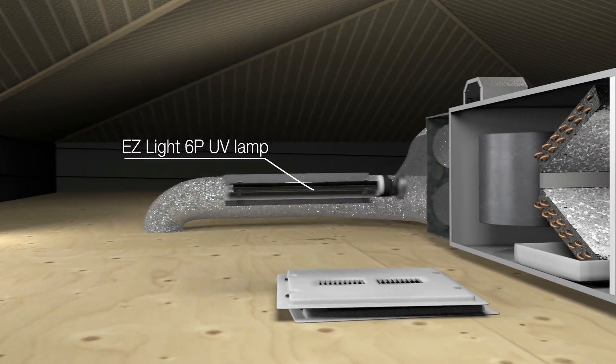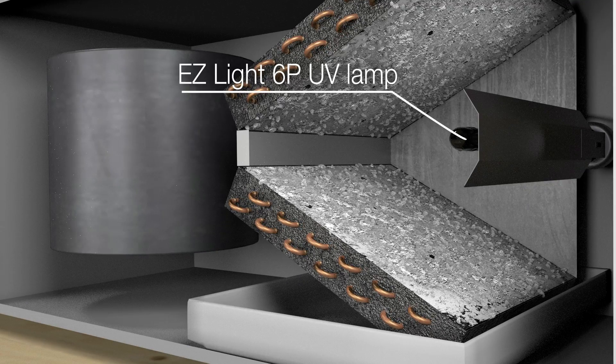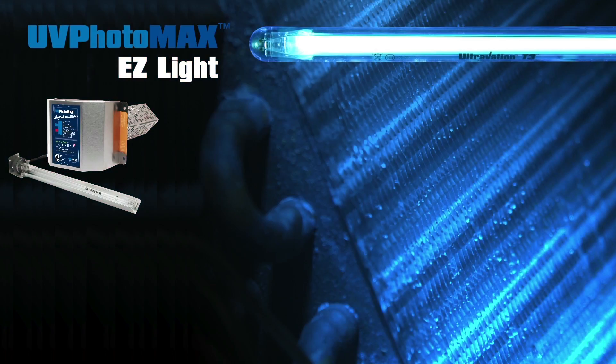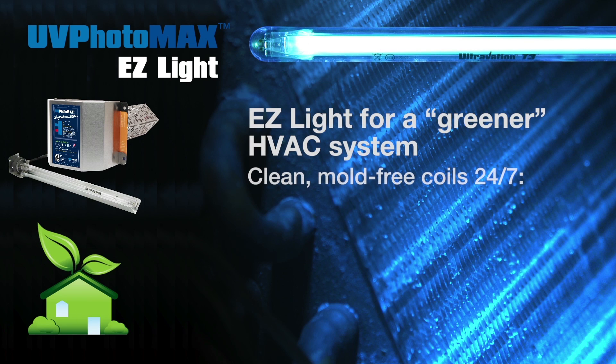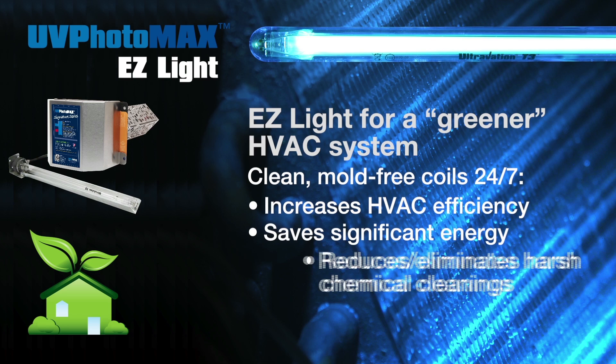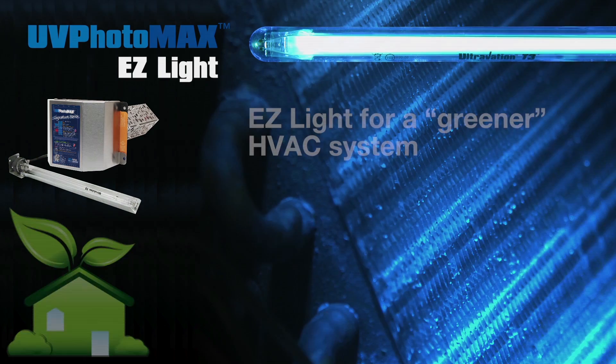And for an even more complete IAQ system, pair the UV Photomax with an EasyLight 6P remote UV lamp to keep the HVAC cooling coil always clean of mold and other biogrowth. HVAC cooling coils that are consistently clean operate far more efficiently, saving significant energy. And those harsh, periodic HVAC chemical cleanings will no longer be needed.